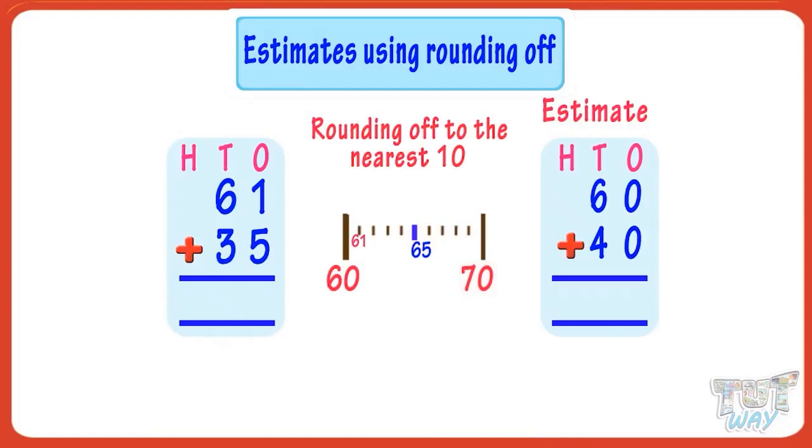Here, the ones place digit is 1. That is, it's less than 5, so we round the whole number to the previous 10, that is 60.